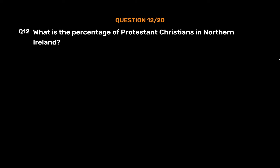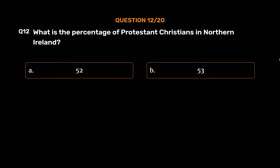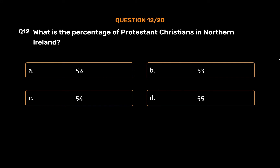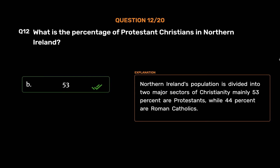Question number 12. What is the percentage of Protestant Christians in Northern Ireland? The correct answer is Option B. Northern Ireland's population is divided into two major sectors of Christianity: mainly 53% are Protestants, while 44% are Roman Catholics.